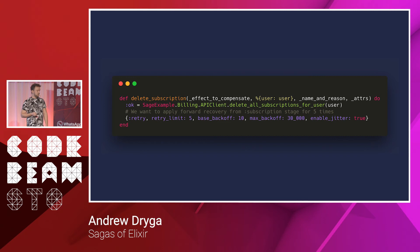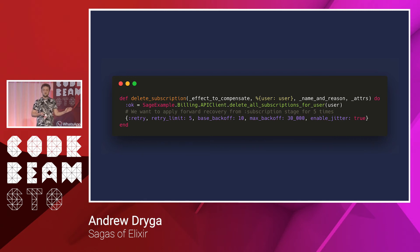The retry count is global for all executions. So if we have five retries here and five elsewhere, and you exhaust five, it fails. This is because we don't want to keep retrying indefinitely — we don't want to play ping pong with the retries.